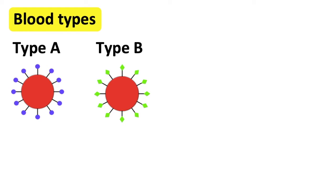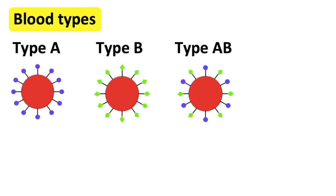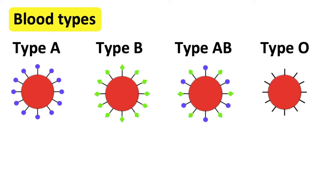There are four main blood groups: Type A, Type B, Type AB, and Type O. Your blood group is identified by the antibodies and antigens in the blood. There are two types of antigens: Antigen A and Antigen B.